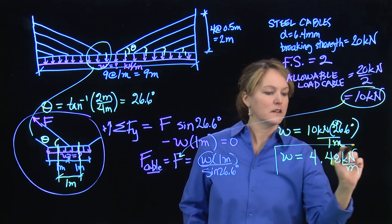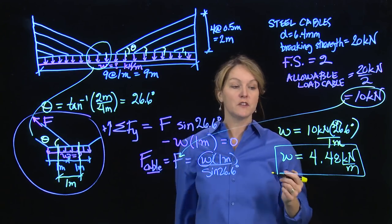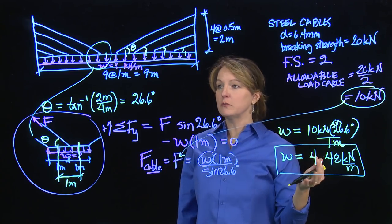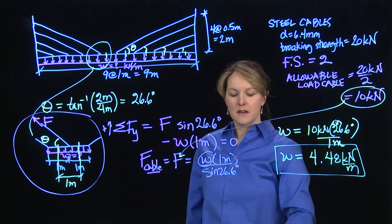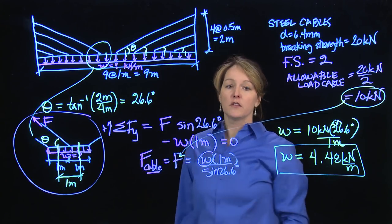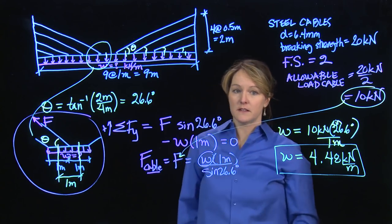So that is the allowable load that we can put on Owl's Bridge before one of the cables breaks, with a factor of safety of two, but it's nice to have a factor of safety. That was based on the longest cable, but if you went through and calculated the force in all of the cables, you'd find that they would be the same, because the angle is the same.